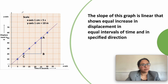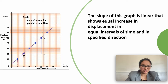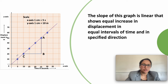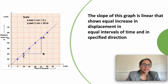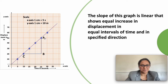This is a graph of a body moving with uniform velocity. The nature of the graph is a straight line. The slope of this graph is linear and shows equal increase in displacement in equal intervals of time.